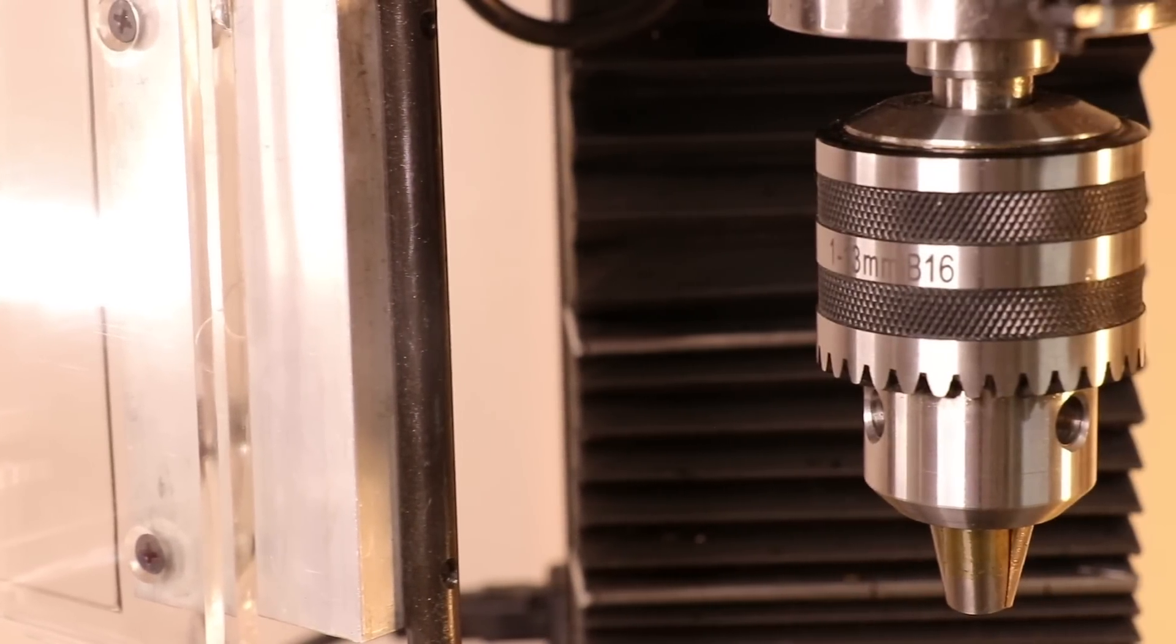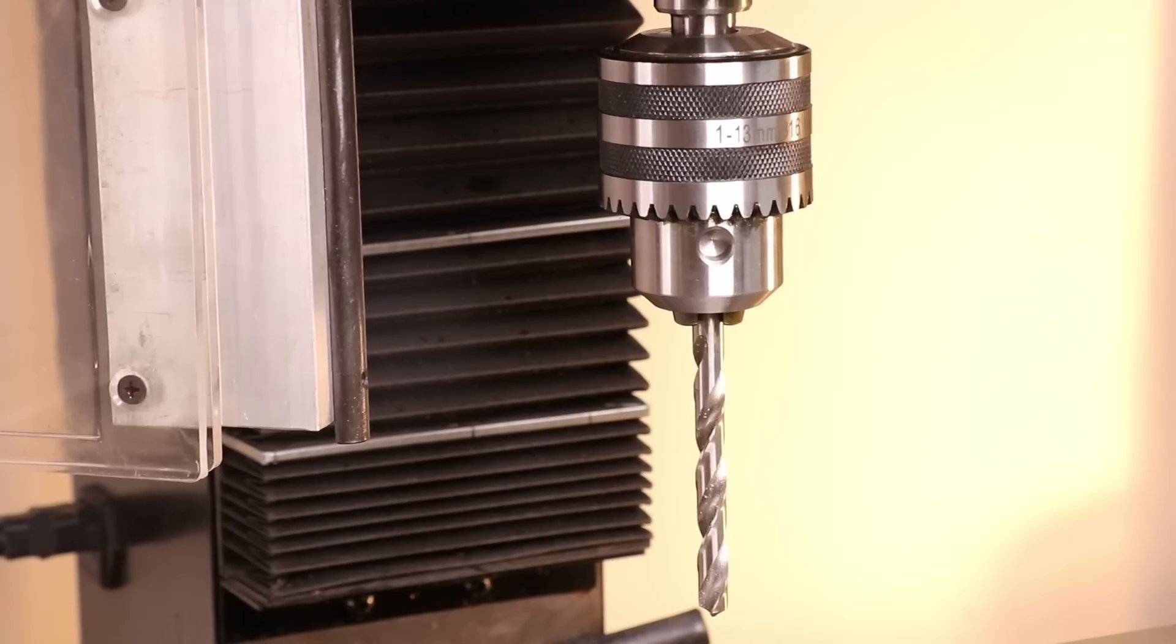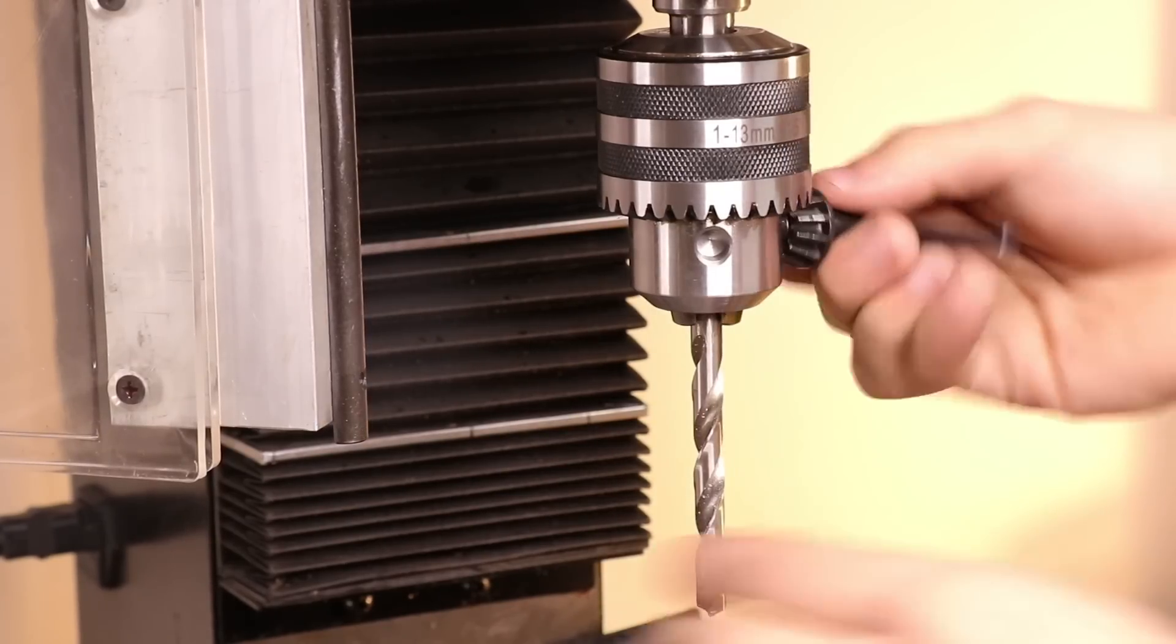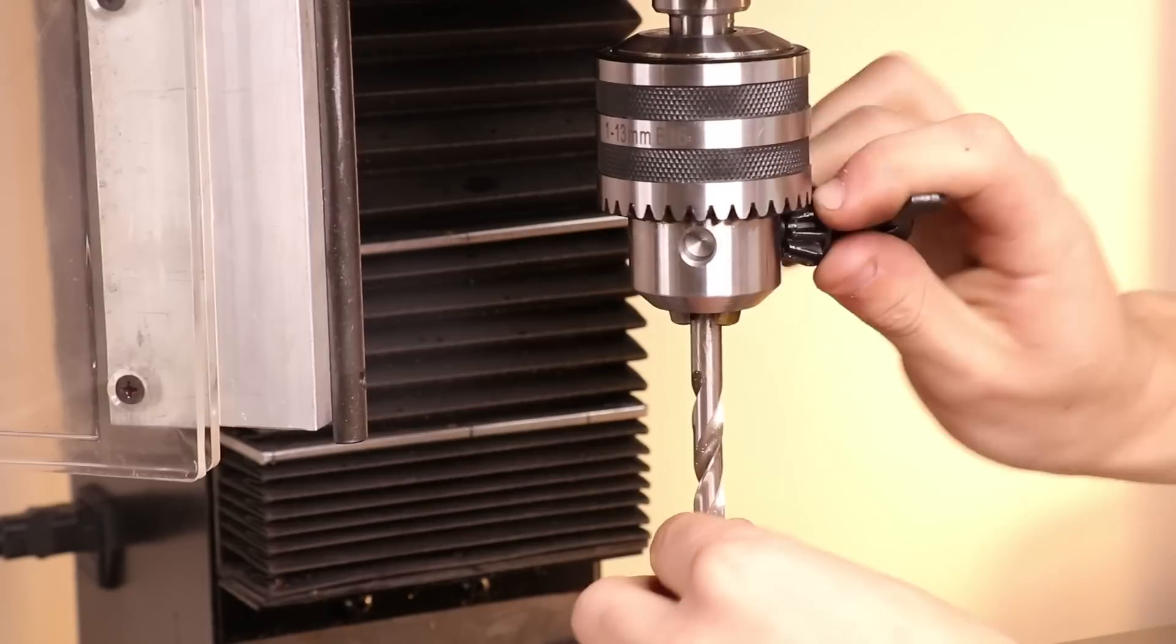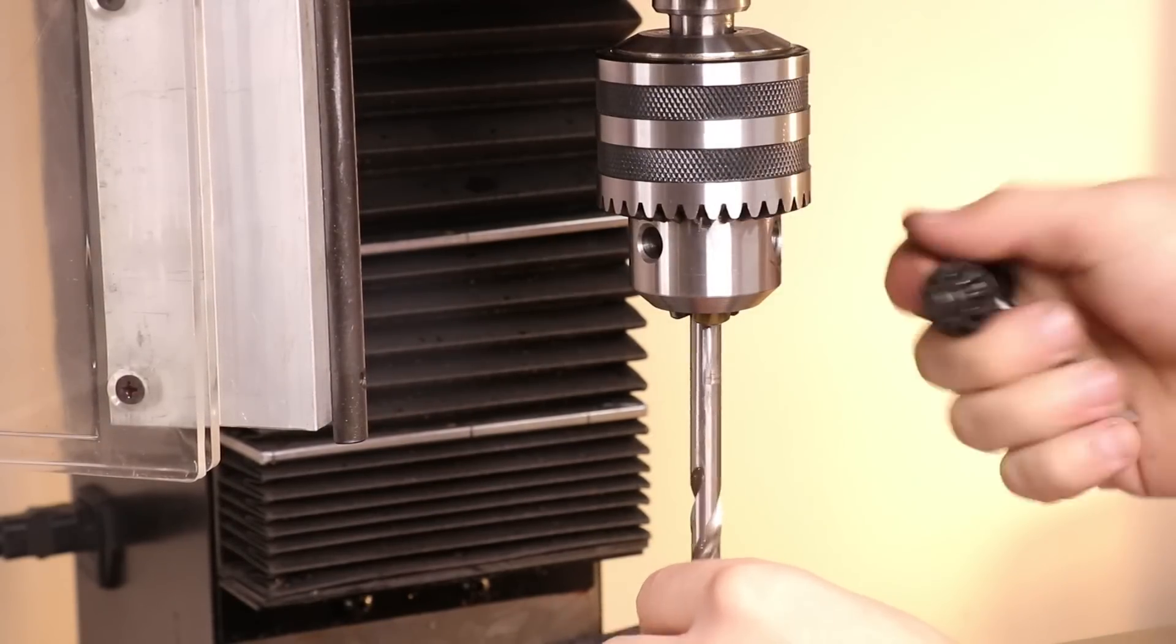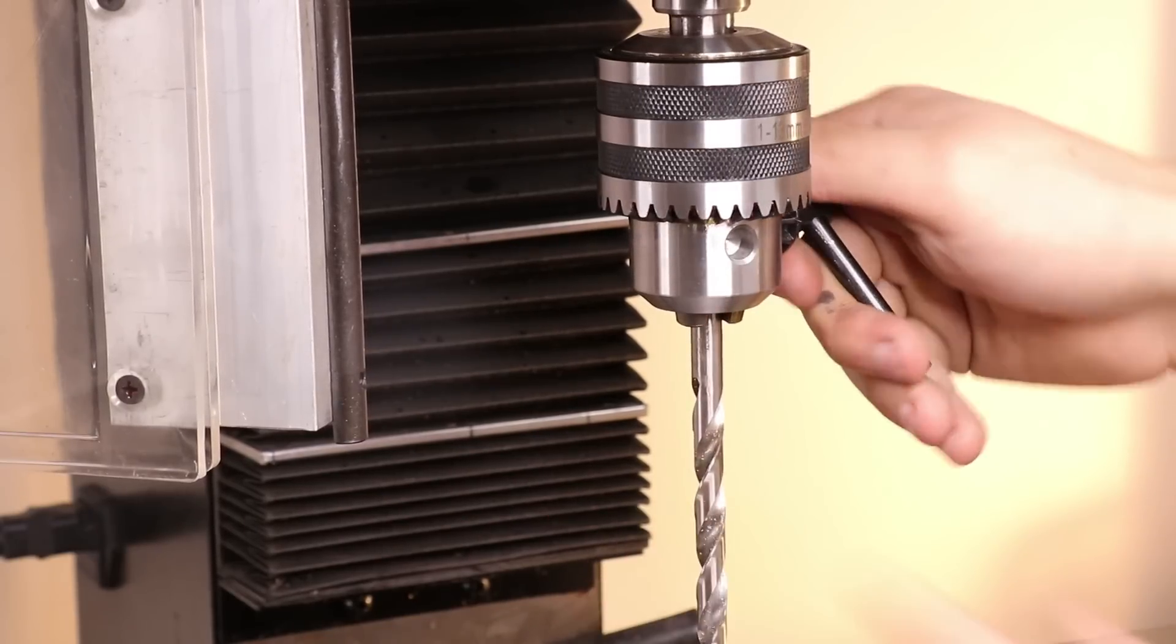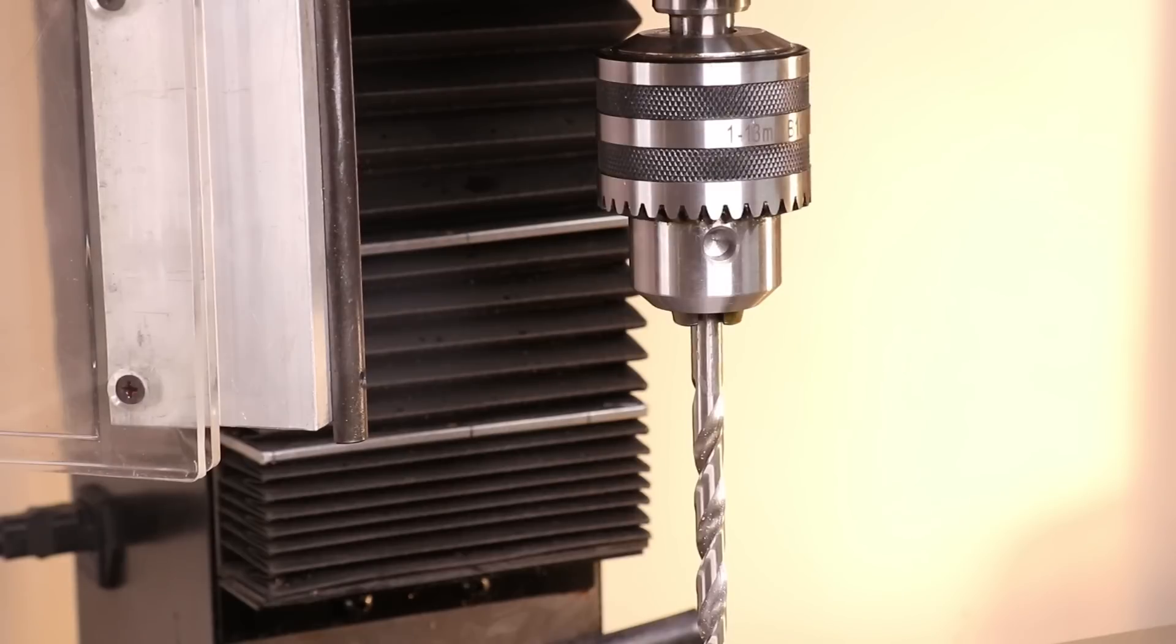I didn't mention it earlier, but as standard, this mill will come with a B-16 Jacob's Chuck. A Jacob's Chuck is really good for holding twist drills and drilling holes, but it's probably a last resort for holding end mills. I mean, you can do it, I've seen it done, but the run-out won't be amazing, and the jaws are just too hard to properly hold onto the hardened end mill.